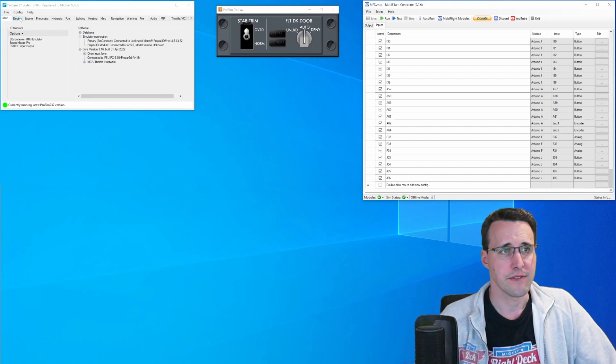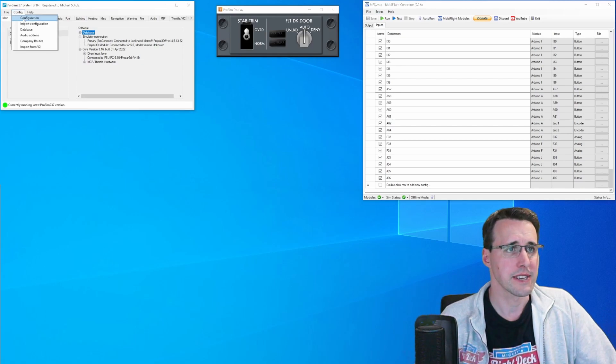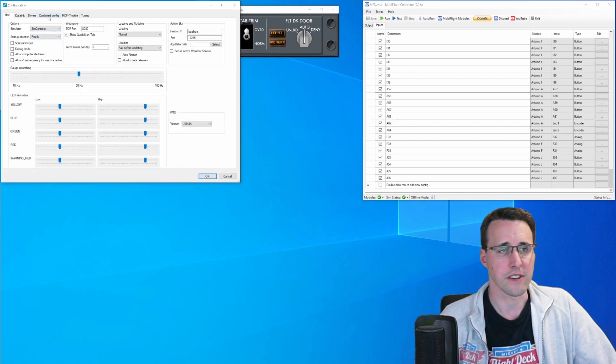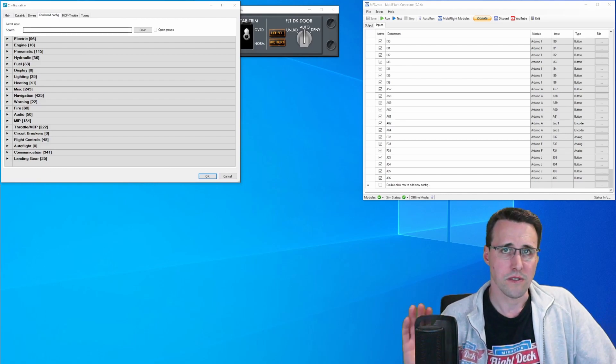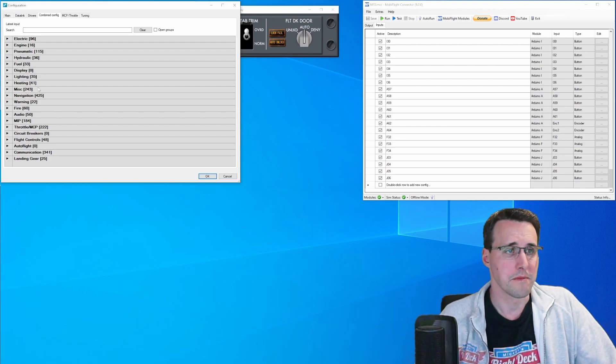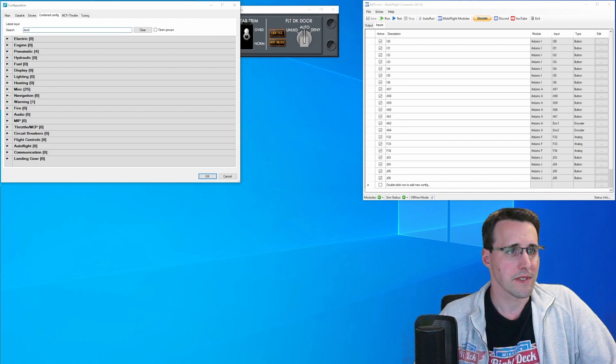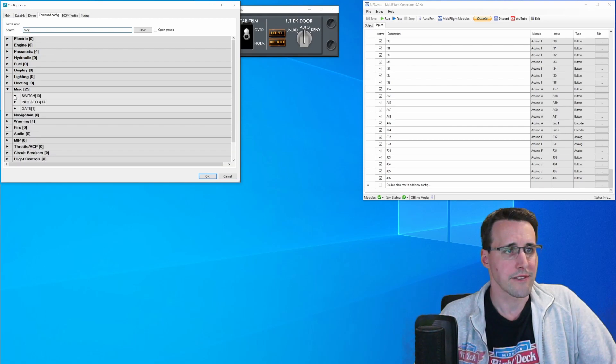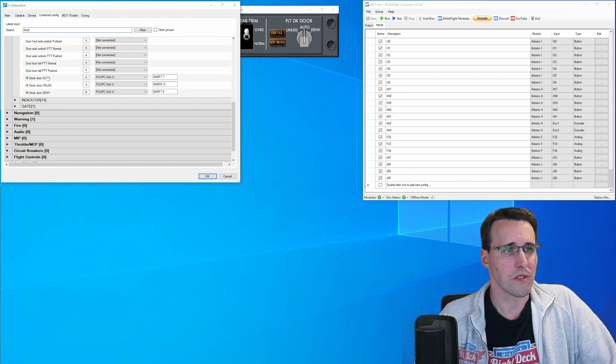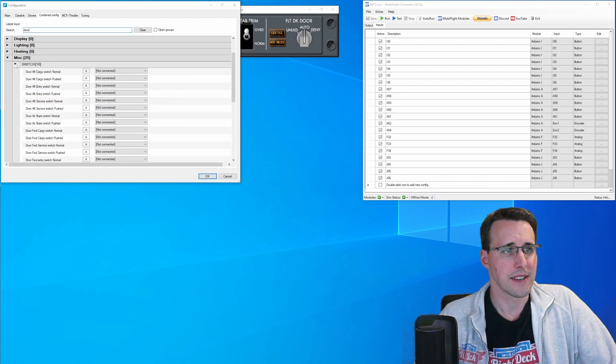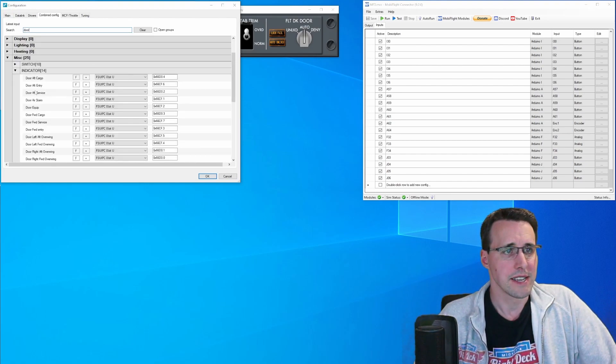In ProSim, every configuration can be done here under Config and Configuration and there in the Combine Config tab. All configuration files can be found here in the Mitchell-Angels tab and because many configurations have found place here in this category, you should use the search function. For example, when you search for door, then you will see only some configurations are left here. And there we also find the three switch states that I have declared.